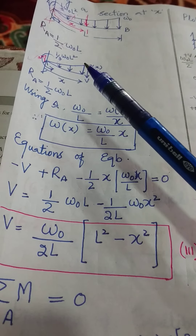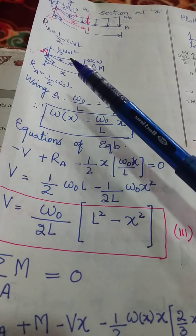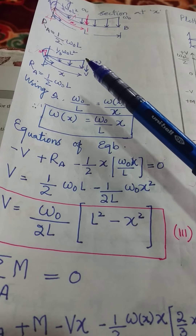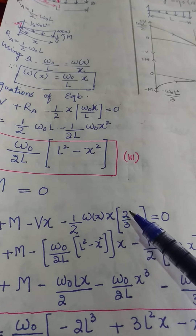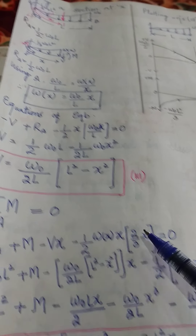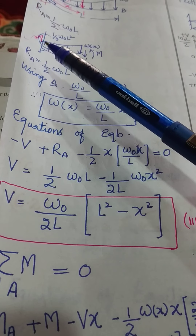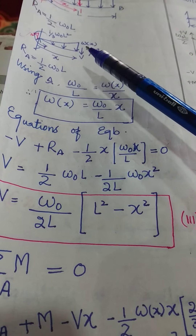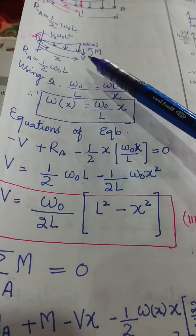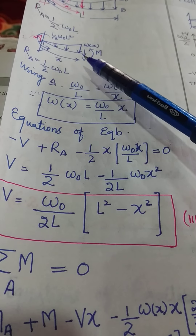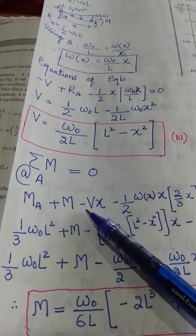We have the moment because of the triangular distributed load. The moment due to this triangular distributed load will be equal to the magnitude of the load, that is one half of W of X into X, multiplied by the force arm, that is two thirds of X, because this load acts at the centroid, and the centroid is at a distance two thirds of X from the fixed end. We also have the moment due to the shear force, which tries to rotate the beam in the clockwise direction, so the moment due to the shear force will be negative, and it will be V into X, being negative because it's clockwise.